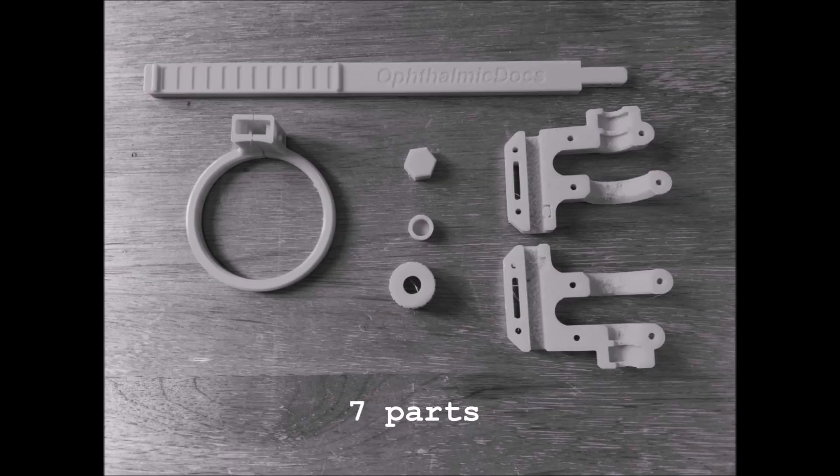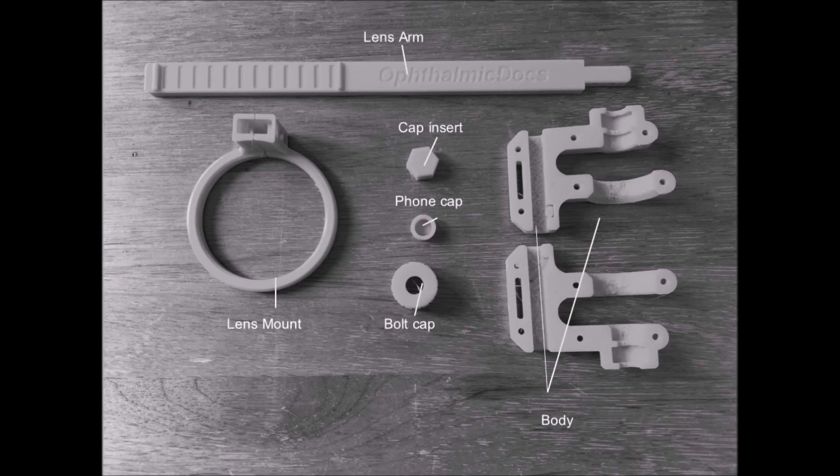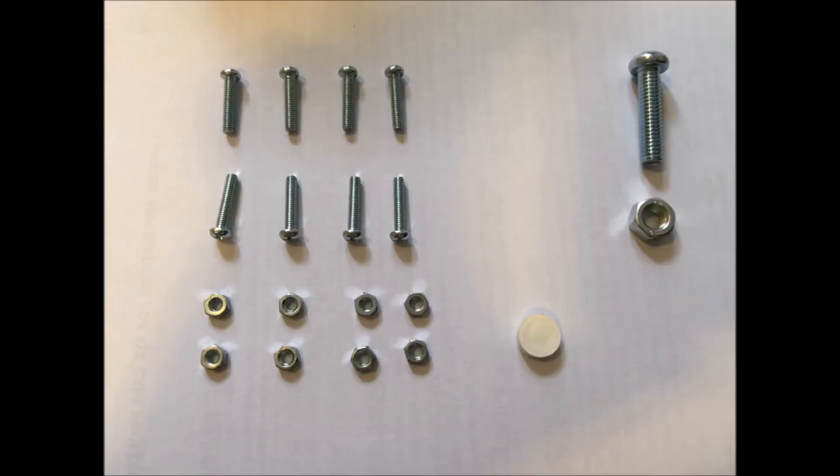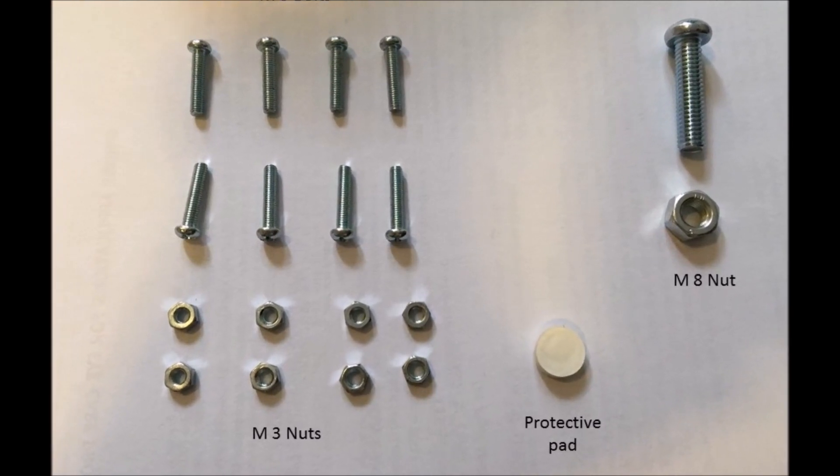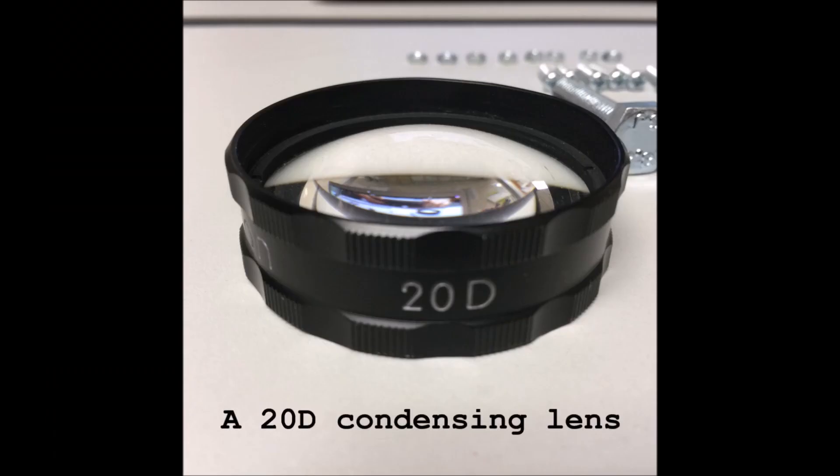First of all, make sure you have all 7 3D printed parts. You'll need a M8 bolt and nut, 8 M3 bolts and nuts, and a round protective pad, and a 20 diopter condensing lens.